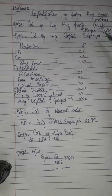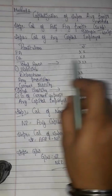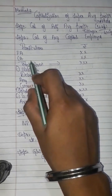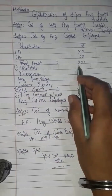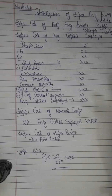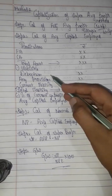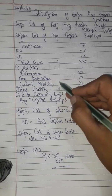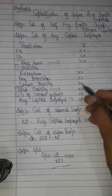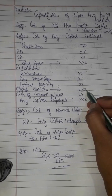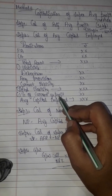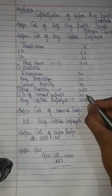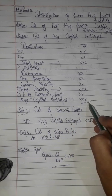Step 2 is the calculation of average capital employed. We use two columns: particulars and amount. First we list assets — fixed assets and current assets — to get a total. Then we subtract liabilities. We subtract current liabilities. We also subtract half of the current year profit to get the average capital employed.